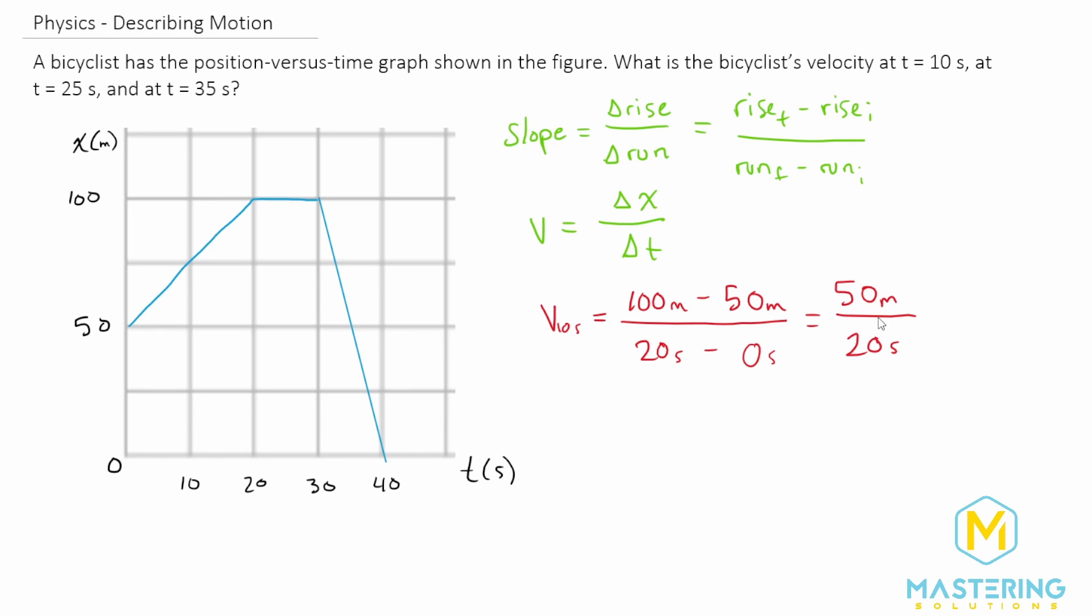Now you can plug this into your calculator if you want, but it's going to be 2.5 just doing some mental math. So the velocity for 10 seconds is 2.5 meters per second.